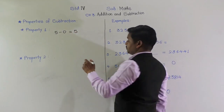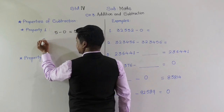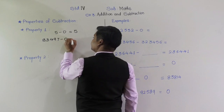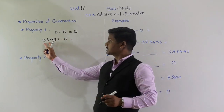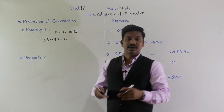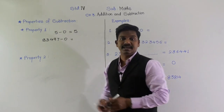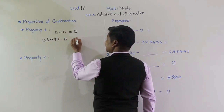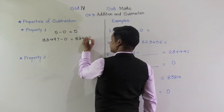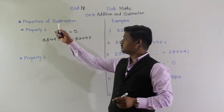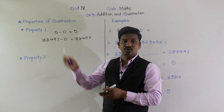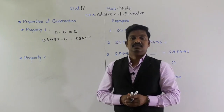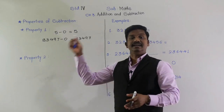Understood? Similarly, for a 5-digit or 6-digit number, if the number is 83,497 minus 0, if we subtract 0 from this number, what answer will we get? This number itself, that is 83,497. So this is the first pattern or property of subtraction: if we subtract 0 from any number, the answer is that number itself.